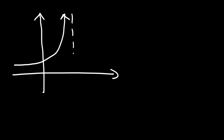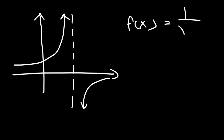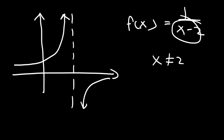Another discontinuity you need to be familiar with is the infinite discontinuity, which usually occurs at a vertical asymptote. One side goes to positive infinity and the other goes to negative infinity. For example, a rational function like 1 over (x minus 2): x cannot equal 2 because the function will be undefined — you'll have a 0 in the denominator — so there's a vertical asymptote at x equals 2, which is a point of discontinuity.